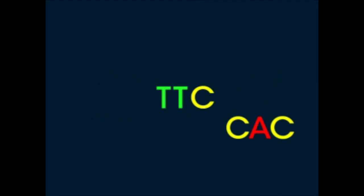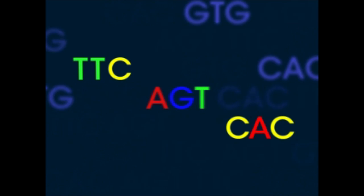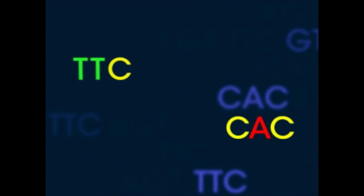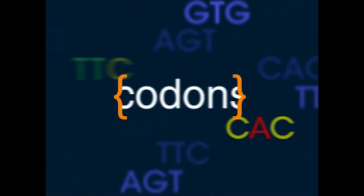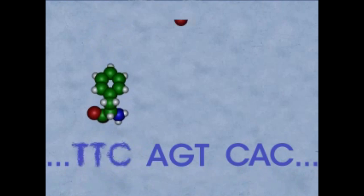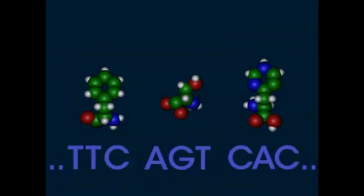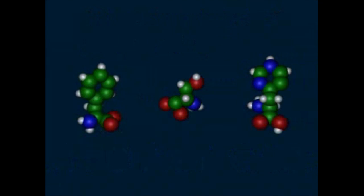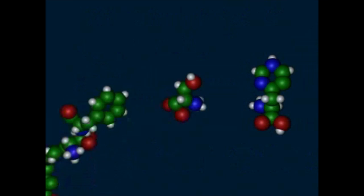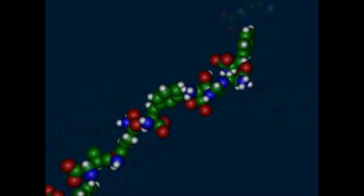While English words can consist of either a few or many letters, DNA words are always three letters long. In the study of genetics, these three-letter words are called codons. Codons act a bit like chemical blueprints, each one providing instructions for a specific kind of building block, or amino acid, to be added to a growing chain. These amino acids are then strung together to create the final product — a protein.